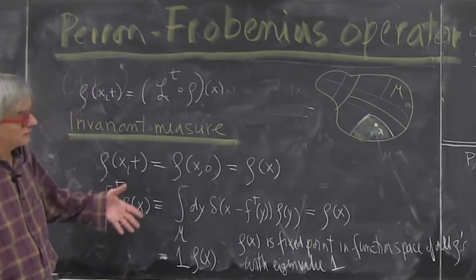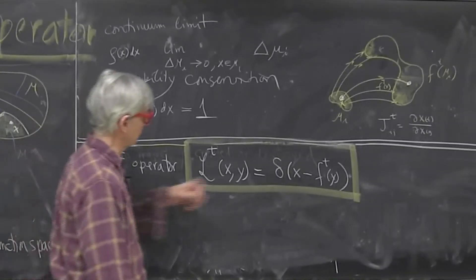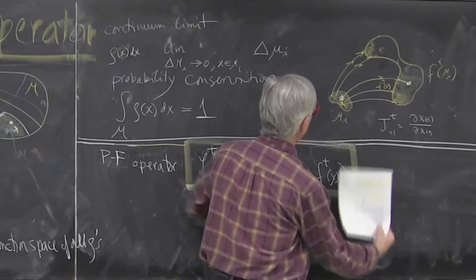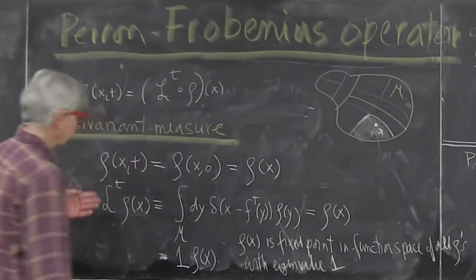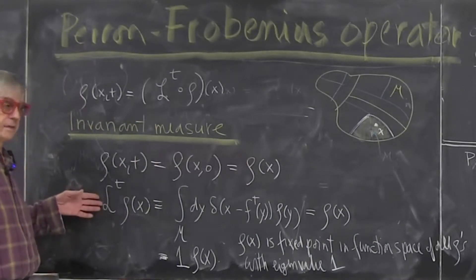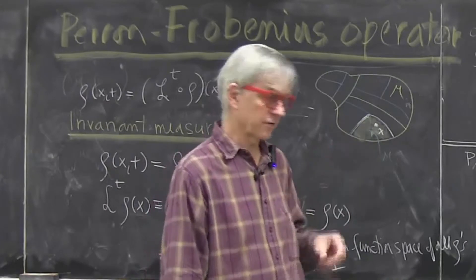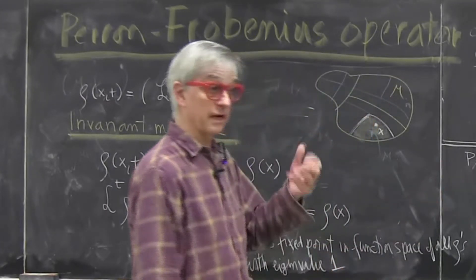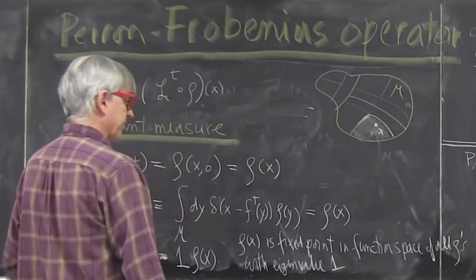And the problem is now recast from the original problem of evolution on the space into problem of evolution of the densities, and particularly interesting density will be the one that doesn't change in time. Just like whenever we had dynamics in final dimensional space, the particular interesting solutions were equilibria, things that didn't change in time. So do such things exist?